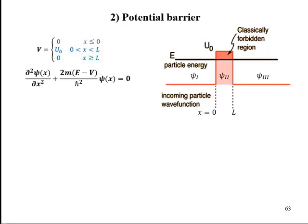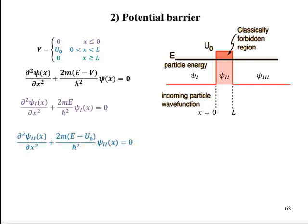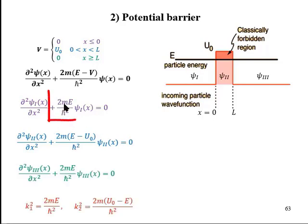Like what we did in case of particle in a box problem, we write the multiplier of second term as square of some other number for the ease of mathematics. Time independent Schrödinger equation in all three regions are these. This term and this term can be written as k₁ square. But this term cannot be equal to the square of any number because this is negative, E is less than U₀.